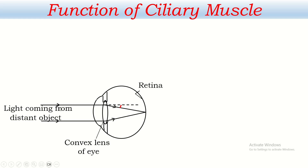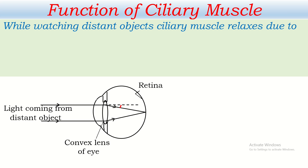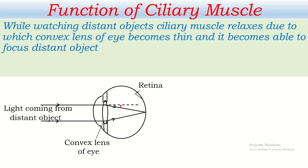The thin lens has less power. Because of less power, the converging capacity is less, due to which the distant object can be focused on the retina. So while watching distant objects, the ciliary muscle relaxes, due to which the convex lens of the eye becomes thin and it becomes able to focus the distant object on the retina. The major function of the ciliary muscle here is that it makes the convex lens of the eye thinner.